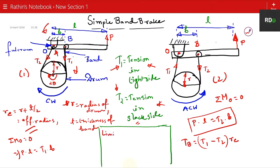T1/T2 = e^(μθ), where μ is the coefficient of friction and θ is the angle of wrap. The angle of wrap is where the band has touched the drum and where it has left.